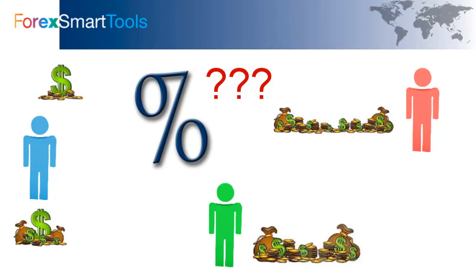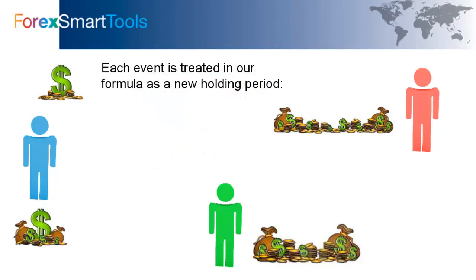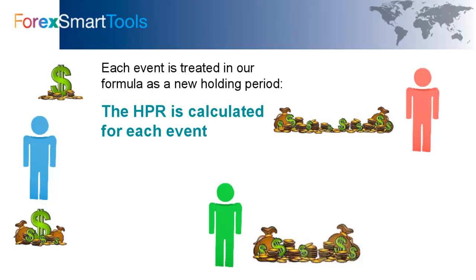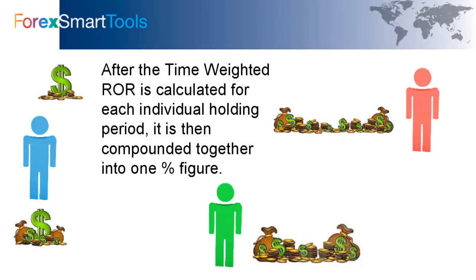Yikes — that is a thorny problem! But it's only thorny if you're trying to do it yourself or on a spreadsheet. If you're using the Forex Smart Tools trade log, it's easy because the trade log does it for you. Each event is treated in the formula as a new holding period — whether that event is money being deposited, withdrawn, a new account being opened, or an existing account being closed. The holding period return (HPR) is calculated for each individual event, then the time-weighted rate of return for each holding period is compounded together into one percentage figure, just like we showed in example number 2.